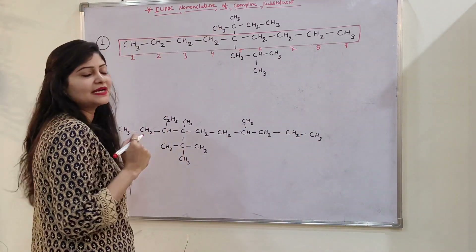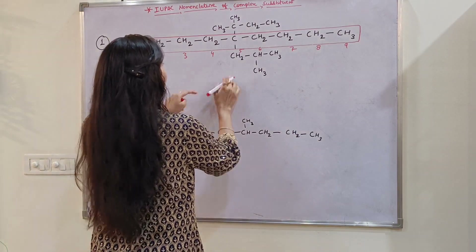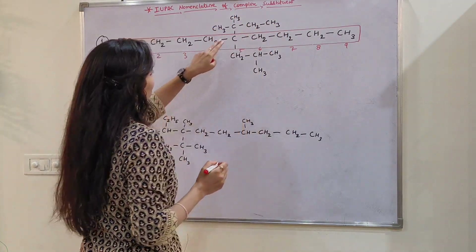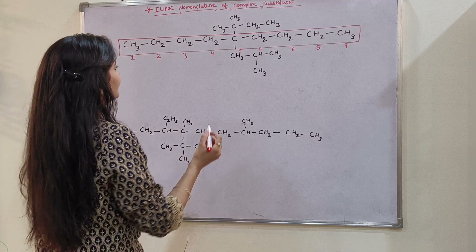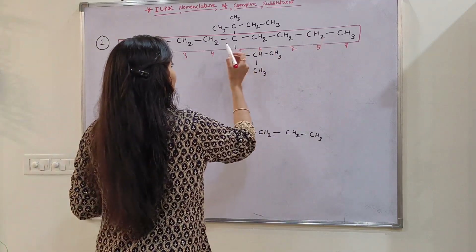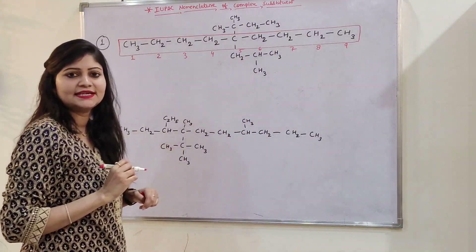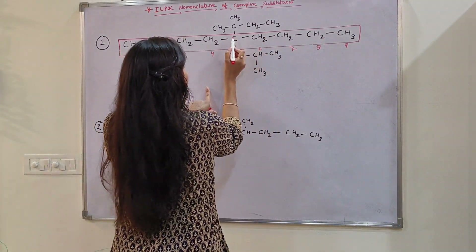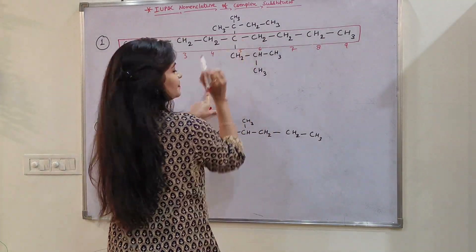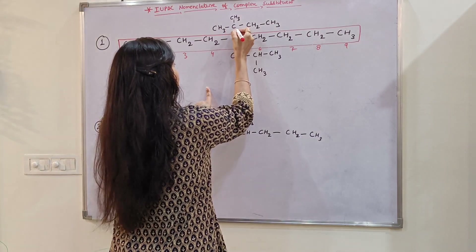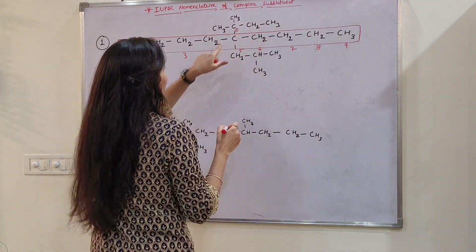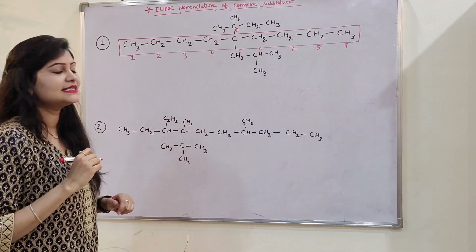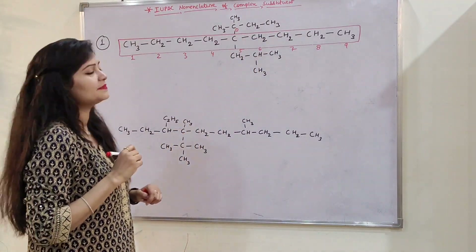First of all, let's learn to write the name part by part. So if we have to write the name of this complex substituent, then what is our rule? Whatever the main chain is, whatever carbon is directly attached, we give it the first number. So this is our main chain. This carbon is directly attached to the main chain, so we give it the first number. After that, this further complex substituent — we have to select the longest chain.